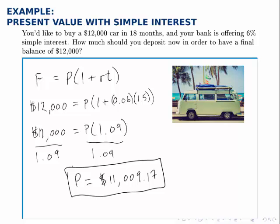So what that says is, if you had $11,009 and 17 cents today, you could deposit that in this account, and in 18 months, in a year and a half, you'd have the $12,000 required to buy the car.